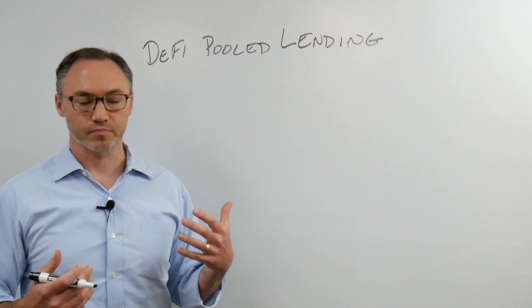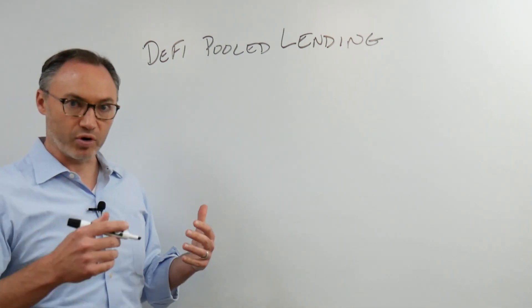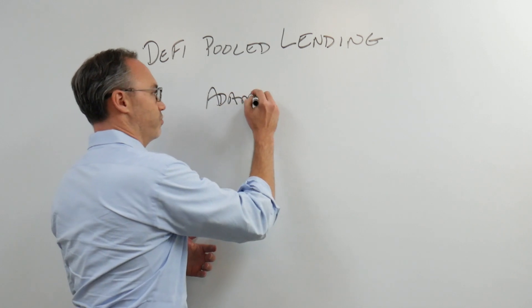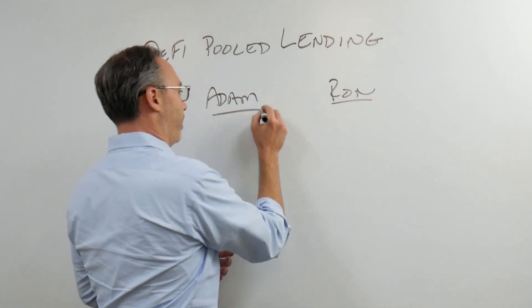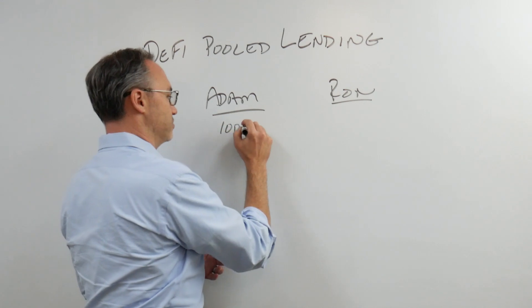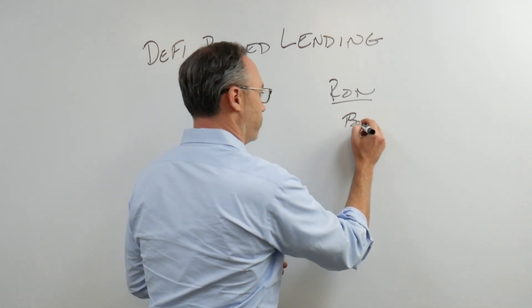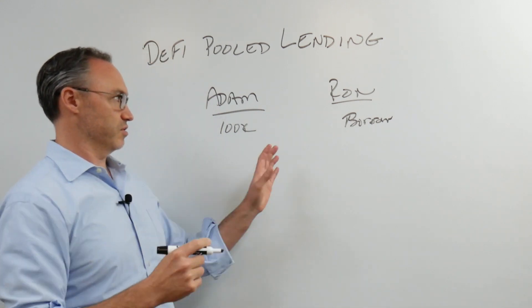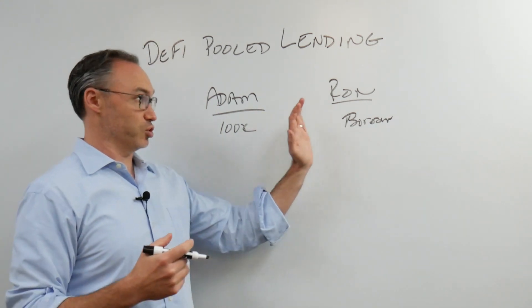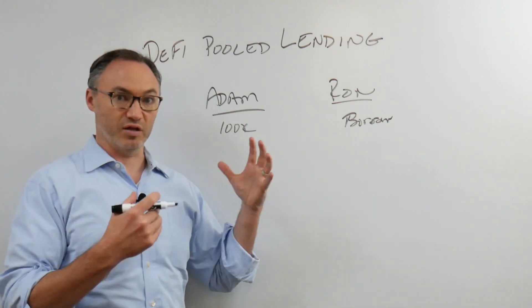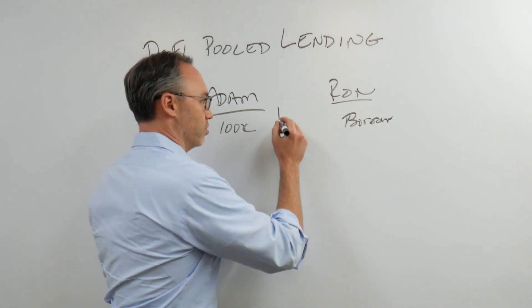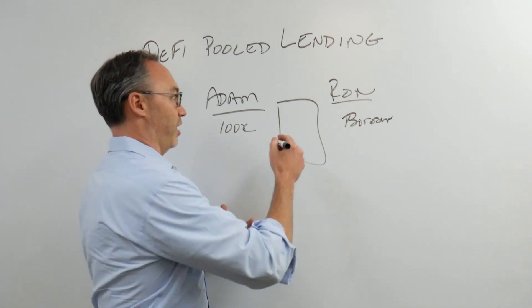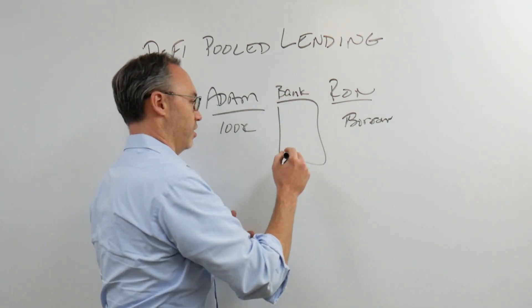So, what is pooled lending? We need to go back to our usual example of Adam and Ron, where Adam has money - Adam has his $100,000. Ron needs to borrow for his business. And of course, we could have this situation where Adam directly lends money to Ron and they have some agreement, or typically there's some intermediary in here, which might be a bank.